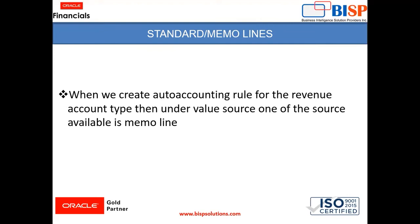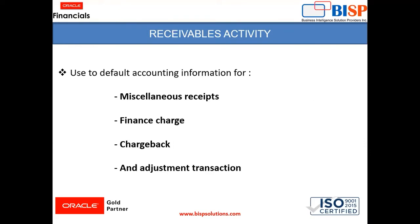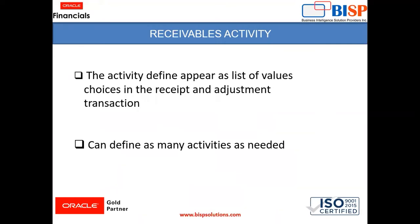We will see how to create memo lines, but before that we are going to discuss one more concept: Receivable Activity. In the Accounts Receivable application, accounting combination or information is fetched from the Receivable Activity. We can create as many Receivable Activities as required by the business, like miscellaneous receipt, finance charge, chargeback, and adjustment transactions. These are examples of Receivable Activity which you create in the instance.